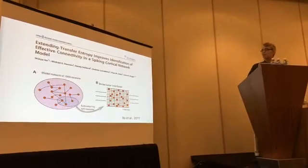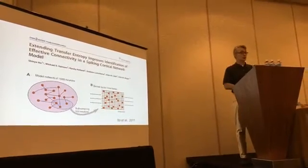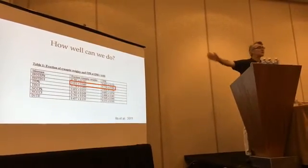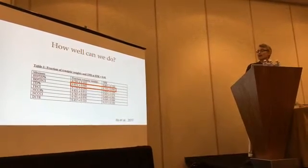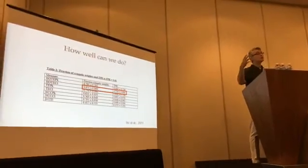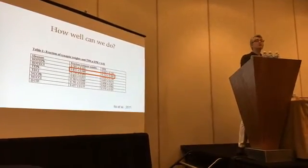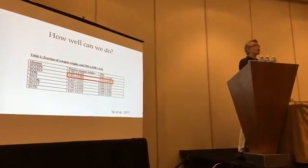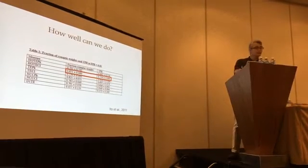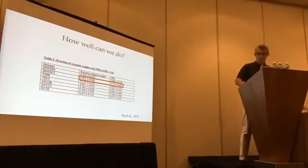We had a paper back in 2011 where we created a network model of 1,000 neurons, subsampled 100 of them, and applied transfer entropy methods. The upshot is that we were able to correctly identify about 85% of the synaptic weights in this model. In the model we know which neurons are connected to which, and we use transfer entropy to estimate direct connections. The strongest synaptic weights are easiest to estimate; the very weak ones are hard. But the weak ones typically don't amount to much of the information traffic in the network. So the method is relatively good.